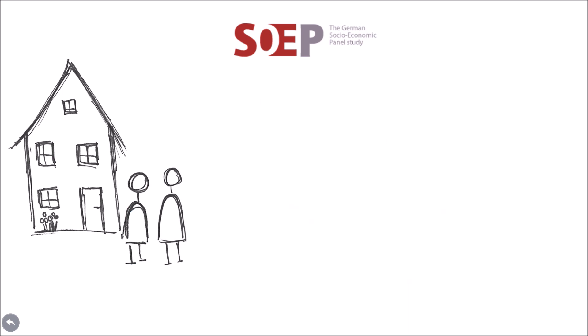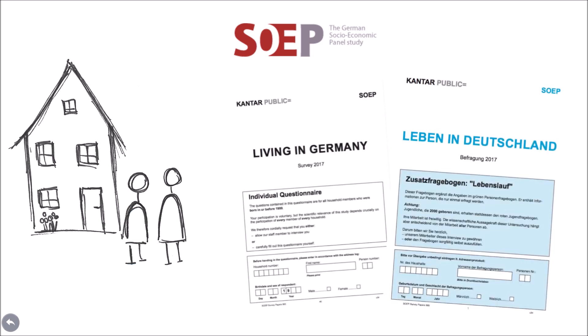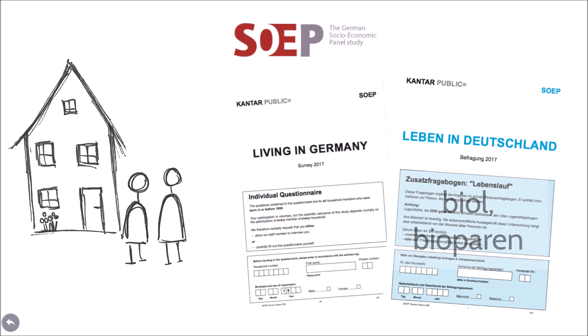Anna has been dating someone for a while and eventually this person moves in with her. As the SOEP is a household panel, the new household member is asked to participate in the survey. Individuals who are interviewed for the first time receive the Supplementary Biography Questionnaire, which aims to collect basic information about the person's life up to the present day, including information about their parents. This forms the basis of the BioParent and BioL datasets, as well as many other biographical and spell datasets.